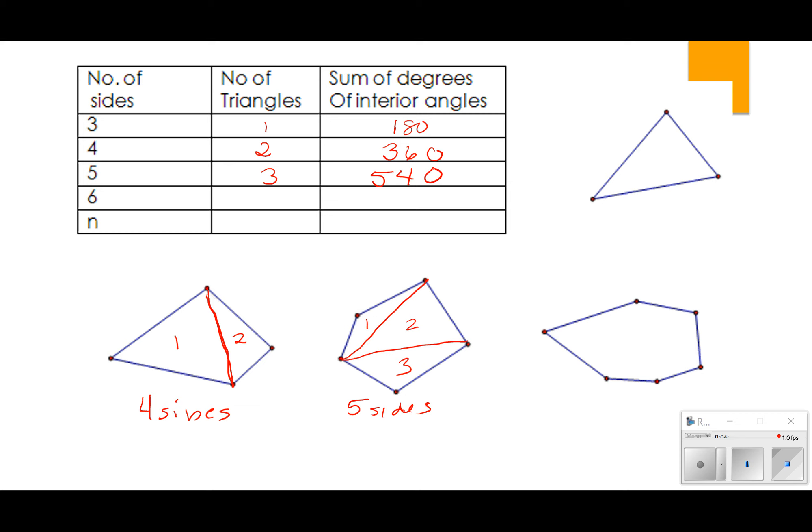If I go to a polygon with six sides, I've got four triangles. And if I add up all the triangles, that's going to give me 540 plus 180, and you guys know I'm using my calculator because you know me. It's going to give me 720 degrees. So the sum of the interior angles of a six-sided polygon is 720 degrees.